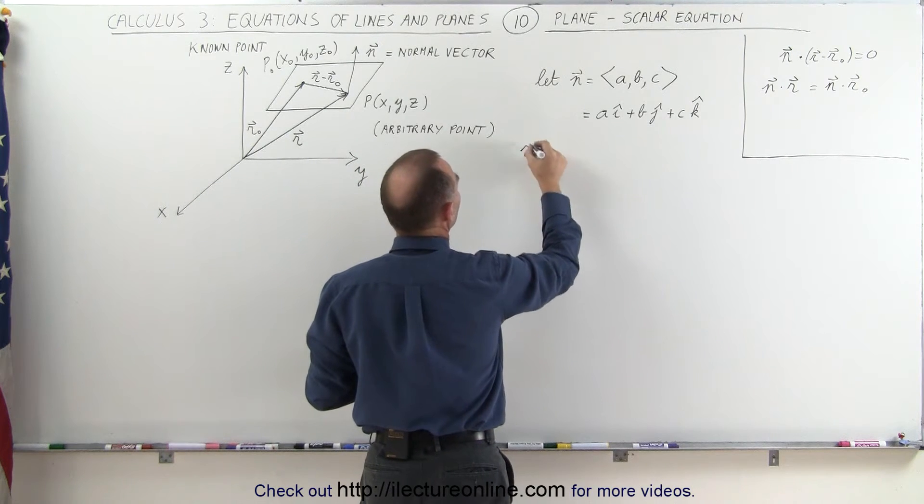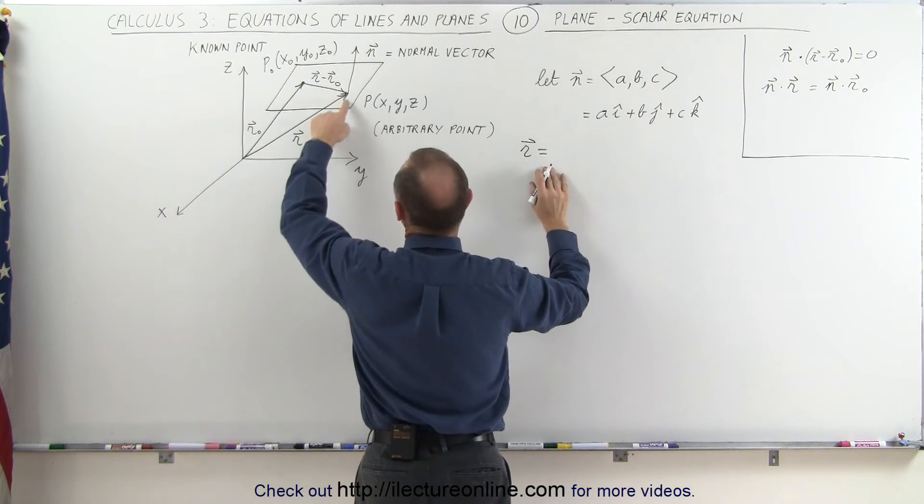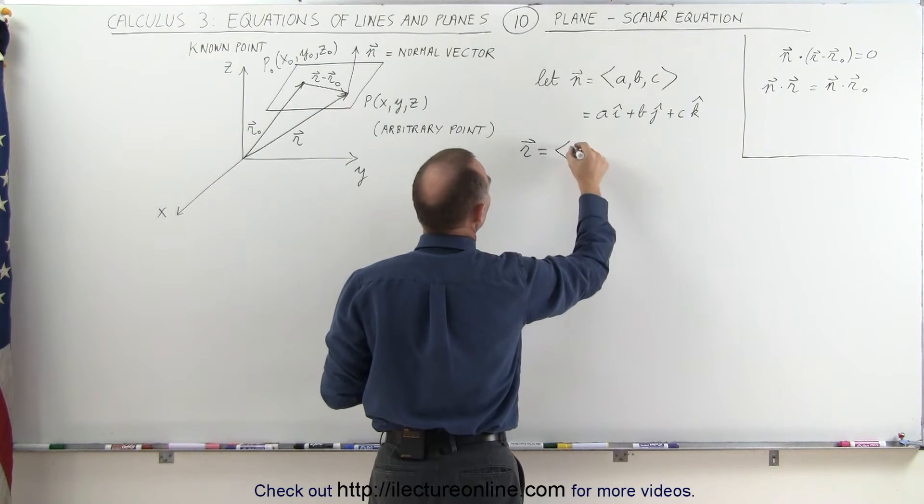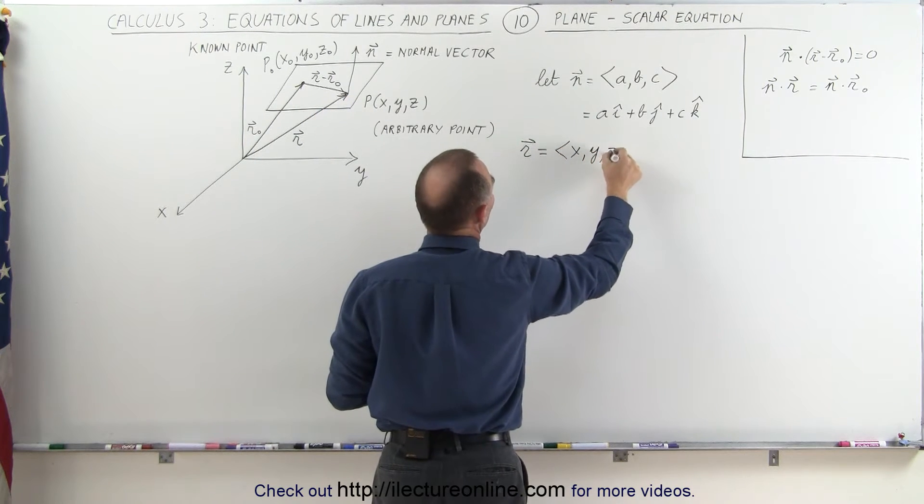We can say that the r vector, the position vector to the arbitrary point x, y, z, can be written as vector x, y, and z.